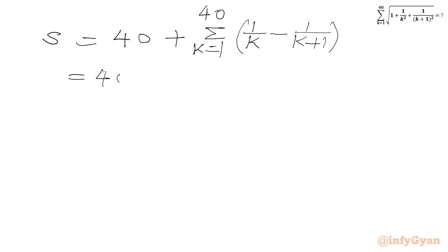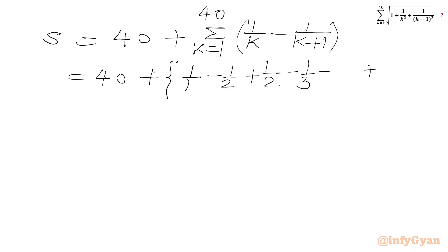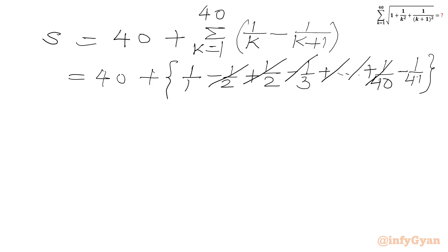This will be equal to 40 plus, let's put all the values of k. k=1 gives 1 over 1 minus 1 over 2; k=2 gives 1 over 2 minus 1 over 3; k=3 gives 1 over 3 minus 1 over 4, and so on; k=40 gives 1 over 40 minus 1 over 41. Now we will cancel the terms that telescope — everything cancels except the very first term 1 over 1, and the last term minus 1 over 41. So I can write this becomes 40 plus 1 minus 1 over 41.